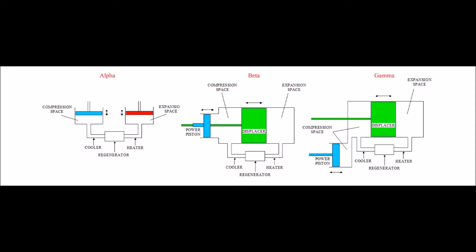Alpha type has two power pistons. One is at the hot junction, while the other is at cold junction.